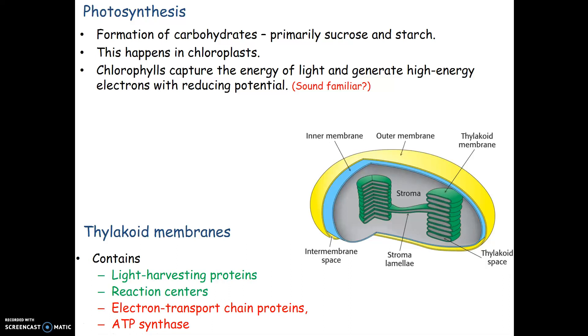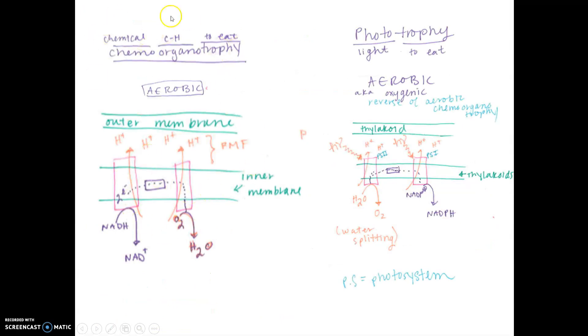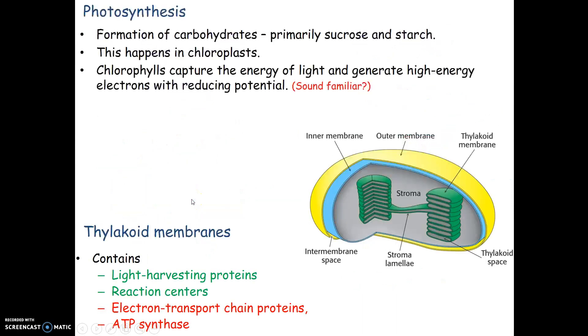What is photosynthesis? This is the overall formation of carbohydrates, primarily sucrose and starch. This happens in the chloroplast. The big difference is that for chemo organotrophy, the electron transport chain occurs in the mitochondria. Photosynthesis happens in the chloroplast, which should look similar to mitochondria.